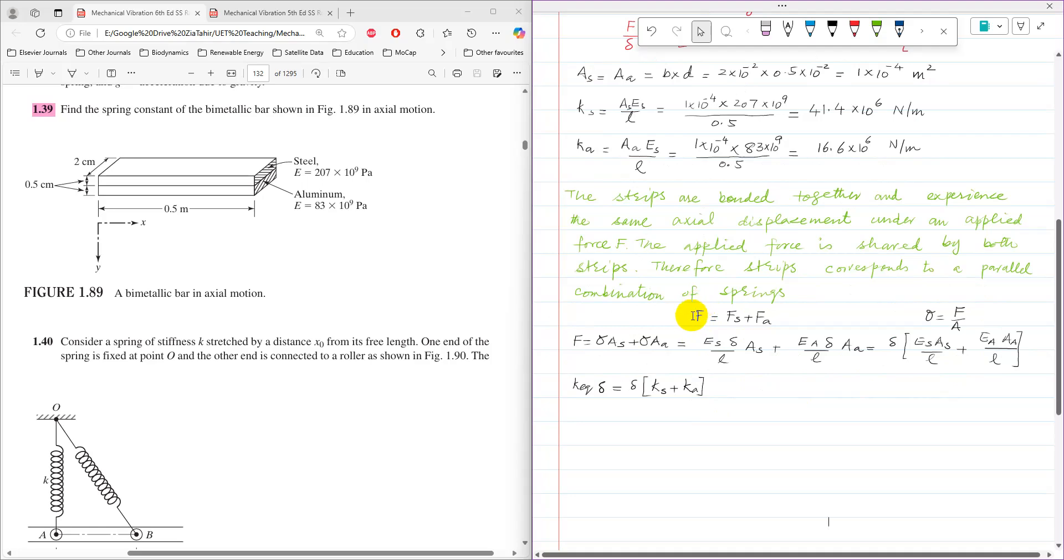As further justification, these forces can be written in terms of stress. Since stress equals force over area, the total force F equals stress times area for steel plus stress times area for aluminum.